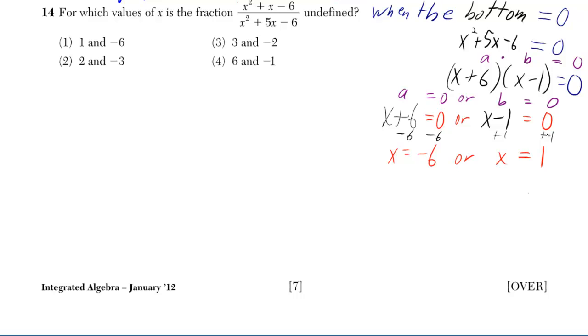So what are the values? Negative 6 and 1, because they both make the bottom equal to 0.